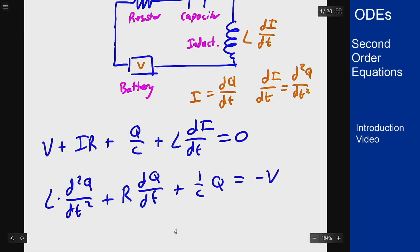Or, putting everything in terms of q, we have L times the second derivative plus R times the first derivative plus 1 over C times q equals minus V. And that again gives us a second order equation to solve.